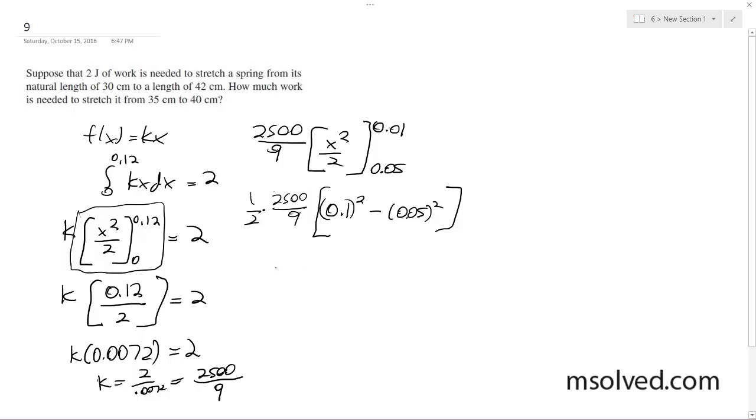All right, and we get 1,500 over 9. I'm looking at my notes. 0.01 minus 1 over 400, and I get...